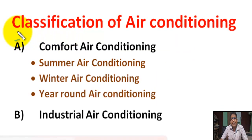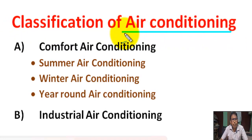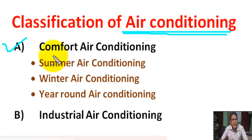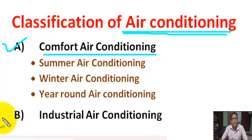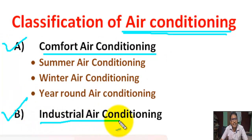Classification of air conditioning — types of air conditioning: A) Comfort air conditioning, B) Industrial air conditioning.